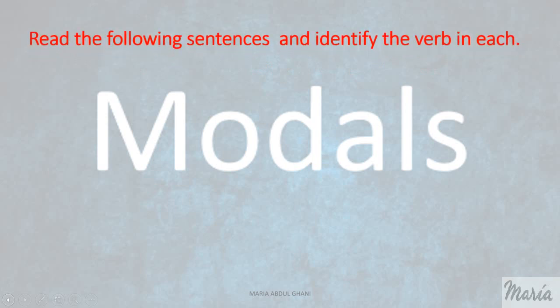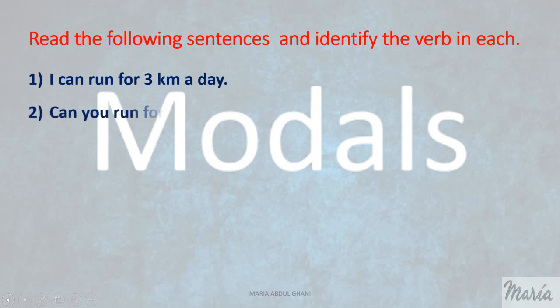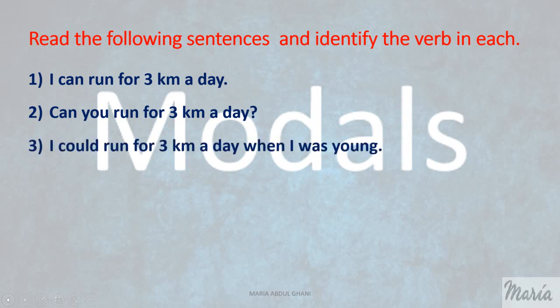Read the following sentences and identify the verb in each. 1. I can run for 3 kilometers a day. 2. Can you run for 3 kilometers a day? 3. I could run for 3 kilometers a day when I was young. 4. Could you help me?